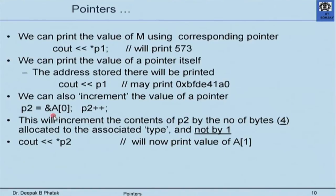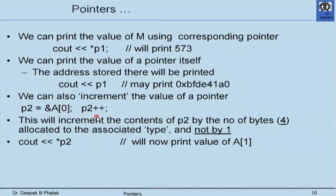We can increment the value of a pointer. For example, p2 = &a[0] stores the address of the 0th element of array a in p2. When we say p2++, p2 does not increase by one but by as many bytes as associated with that array type. Since float requires four bytes, the address advances by four bytes. The implicit understanding of the C++ compiler is that you now want the pointer to point to the next element of the array, which is four bytes away, not one. So cout << *p2 will print the value of a[1].